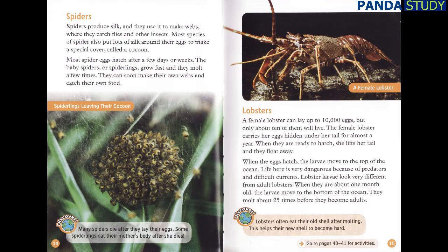Spiders. Spiders produce silk and they use it to make webs where they catch flies and other insects. Most species of spider also put lots of silk around their eggs to make a special cover called a cocoon. Most spider eggs hatch after a few days or weeks. The baby spiders, or spiderlings, grow fast and they molt a few times. They can soon make their own webs and catch their own food.